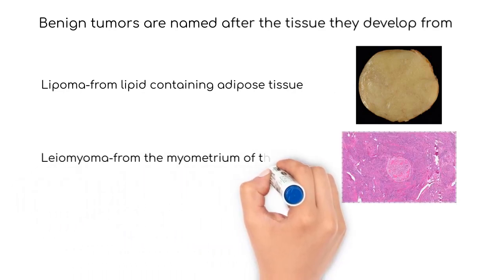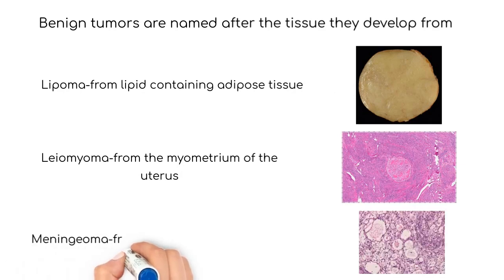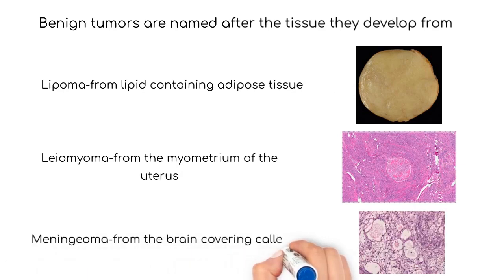Leiomyomas, or uterine fibroid tumors, develop from the middle layer of the uterus called the myometrium. Meningiomas develop from the coverings of the brain called the meninges, particularly the middle layer called the arachnoid mater.